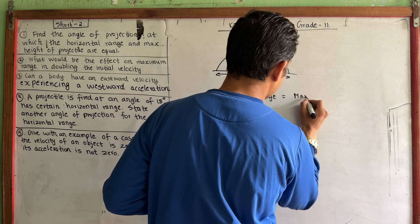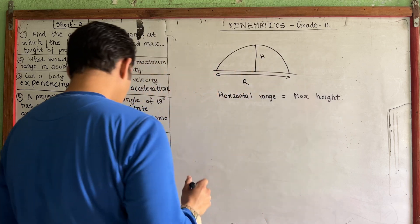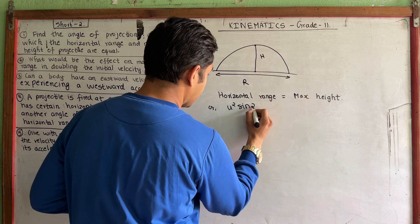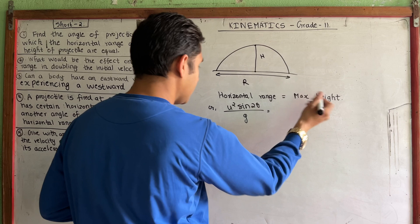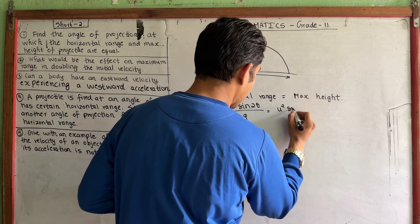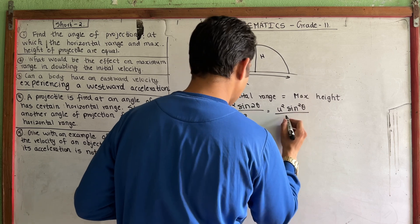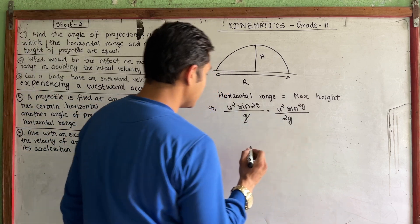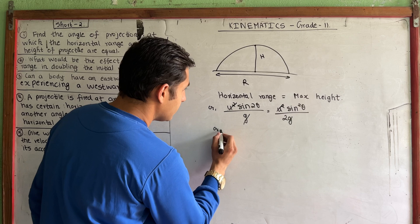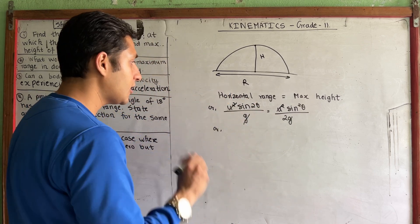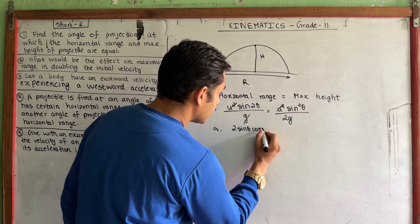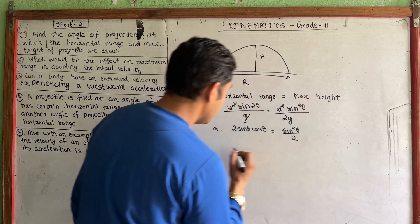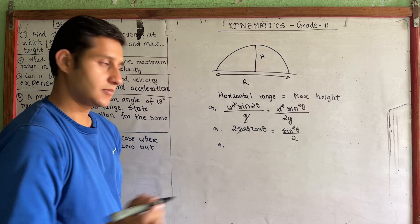Let's start with the formulas. The horizontal range formula is R = u² sin2θ / g. The maximum height formula is H = u² sin²θ / 2g. Setting R equal to H: u² sin2θ / g = u² sin²θ / 2g. Since sin2θ = 2 sinθ cosθ, this simplifies nicely.